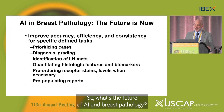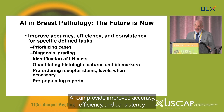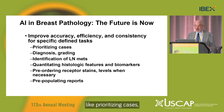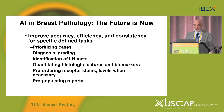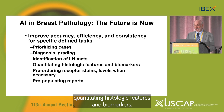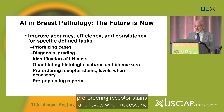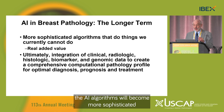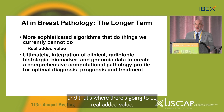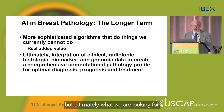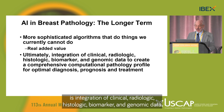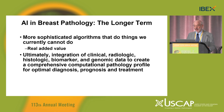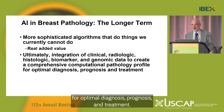What is the future of AI in breast pathology? The future is now. AI can provide improved accuracy, efficiency, and consistency for specific tasks like prioritizing cases, diagnosis, grading, identification of lymph node metastases, quantitating histologic features and biomarkers, pre-ordering receptor stains, and pre-populating reports. Longer term, AI algorithms will become more sophisticated and do things we currently can't. Ultimately, we're looking for integration of clinical, radiologic, histologic, biomarker, and genomic data to create a comprehensive computational pathology profile for optimal diagnosis, prognosis, and treatment. Thank you.